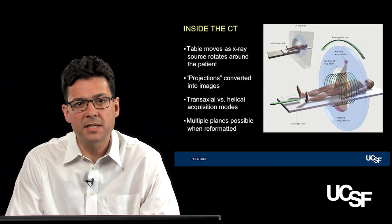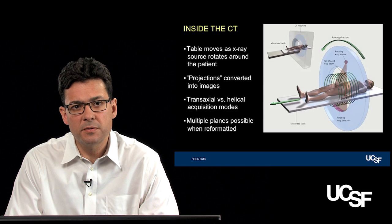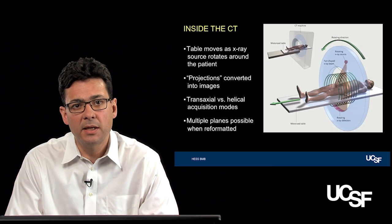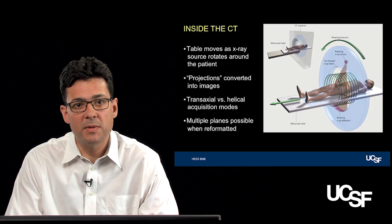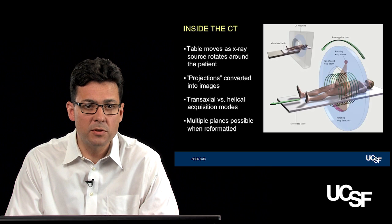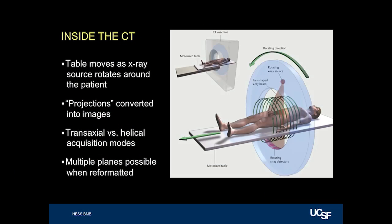Inside the CT scanner, the table moves as the X-ray source rotates around the patient, such that you're covering a three-dimensional volume as the source moves around. Individual projections are converted into images, which may be two-dimensional or three-dimensional. Two-dimensional images are referred to as transaxial. An image is obtained through the patient, the table is moved, another image is obtained, and this continues until the desired field of view is covered.